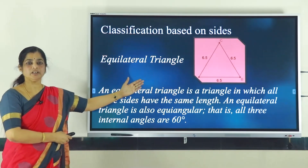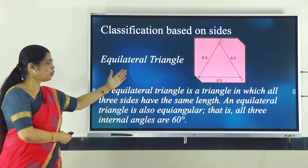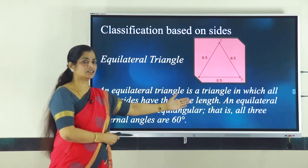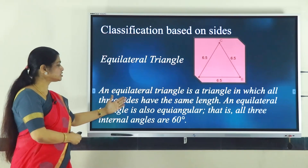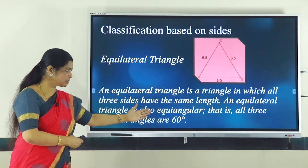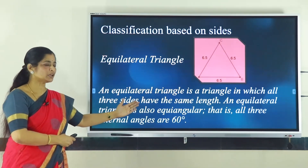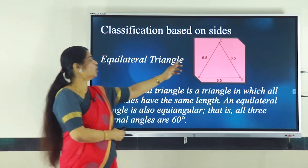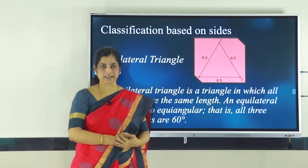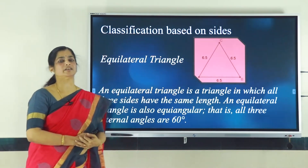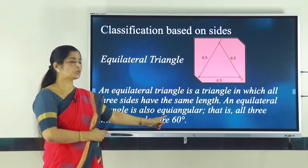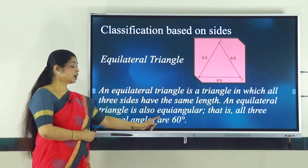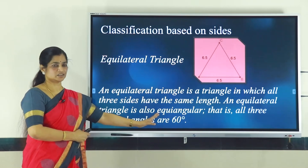First, let us study about equilateral triangle. An equilateral triangle is a triangle in which all three sides have the same length. An equilateral triangle is also equiangular — it is called equiangular because all three angles measure the same, that is 60 degrees each.